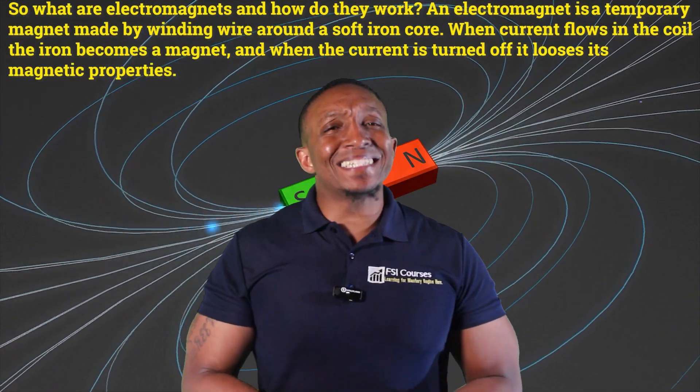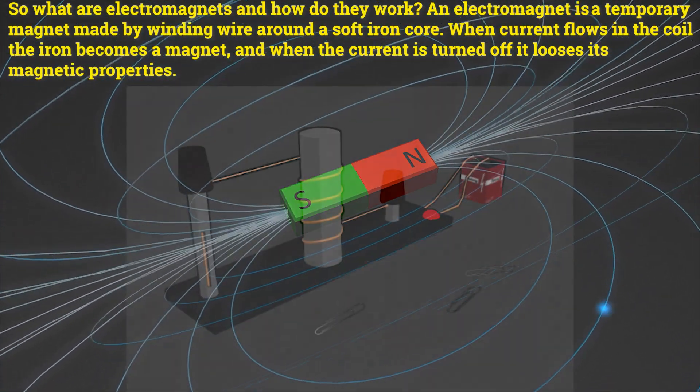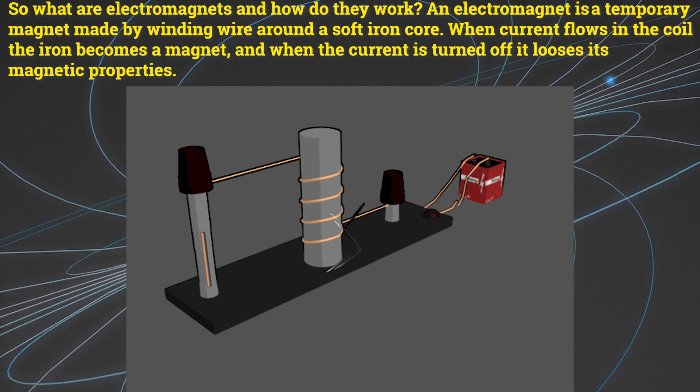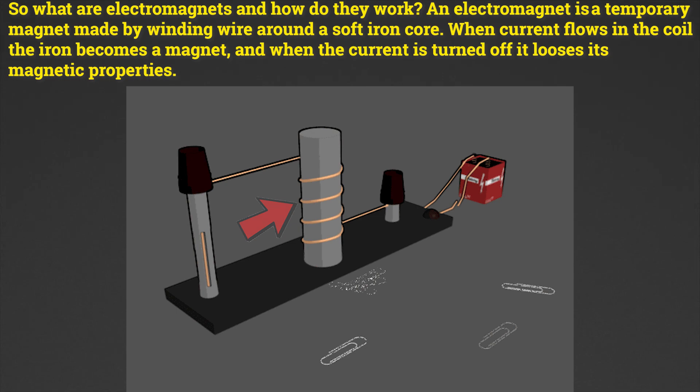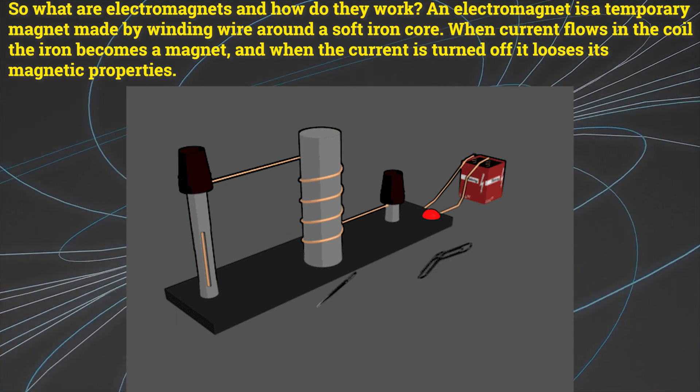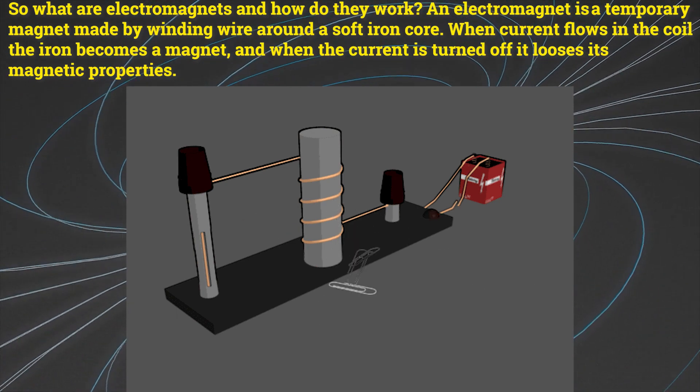So what are electromagnets and how do they work? An electromagnet is a temporary magnet made by winding wire around a soft iron core. When current flows in the coil, the iron becomes a magnet. And when the current is turned off, it loses its magnetic properties.